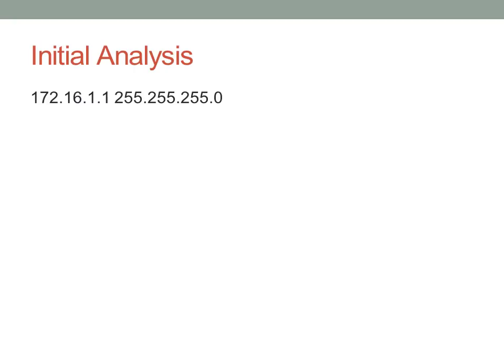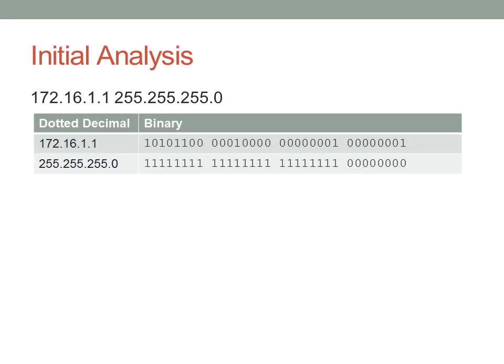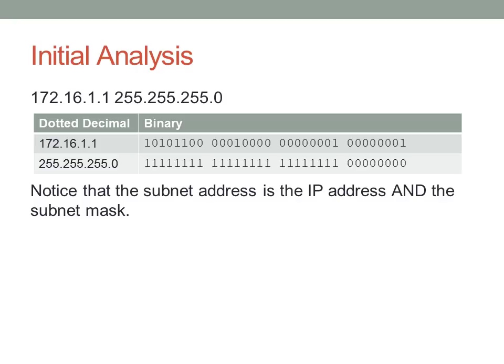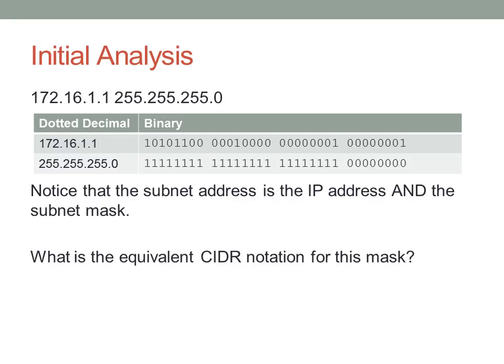Let's look at a specific example: the address 172.16.1.1 with a 255.255.255.0 network mask. Converting to binary, the subnet portion is determined by the logical AND of the address and the subnet mask, giving us 172.16.1.0 — this is the subnet. As a quick test, what is the CIDR notation for 255.255.255.0? You need to be very good at converting between dotted decimal notation and CIDR notation and be able to go back and forth between them.